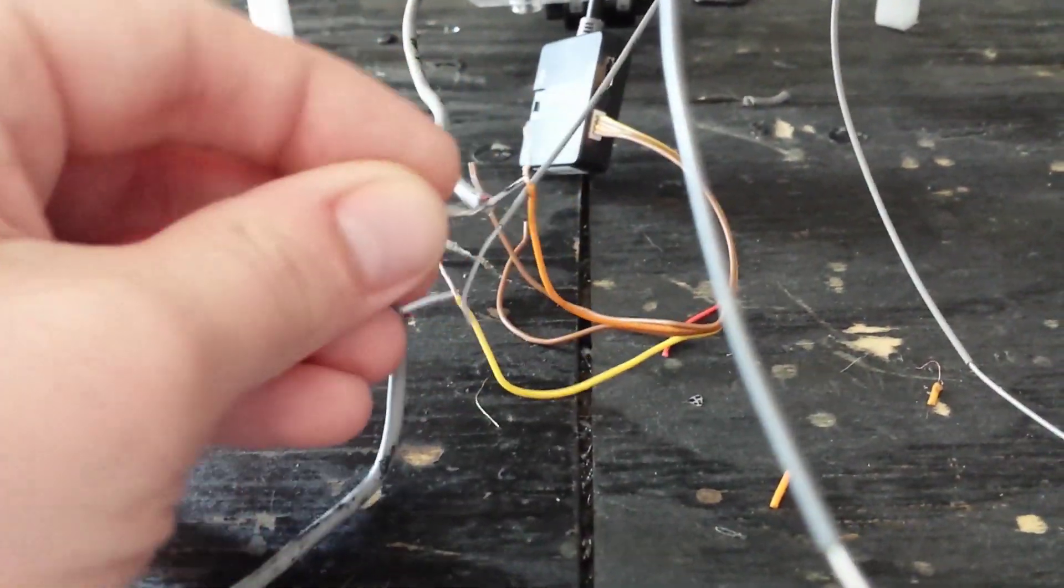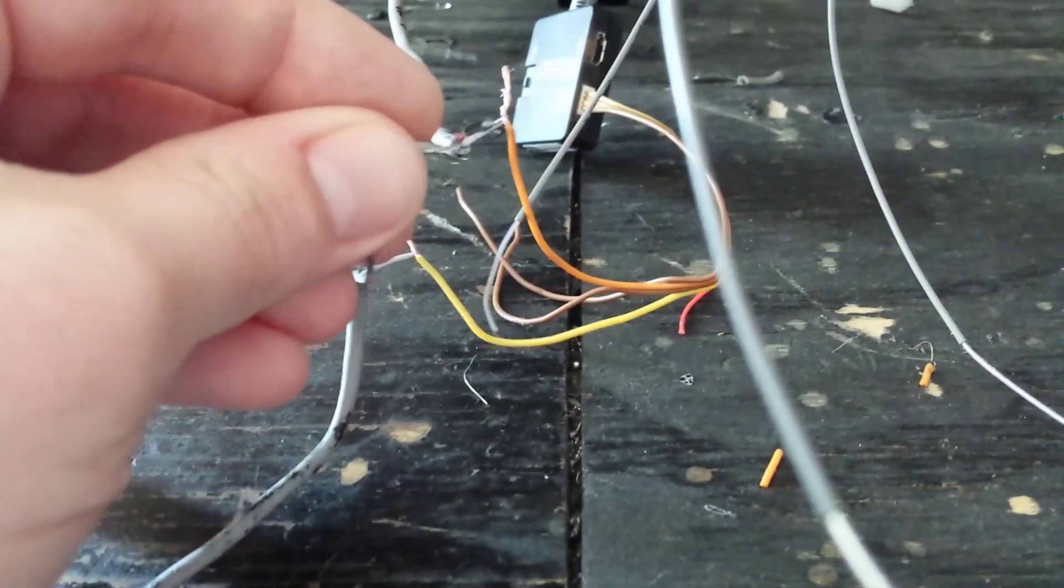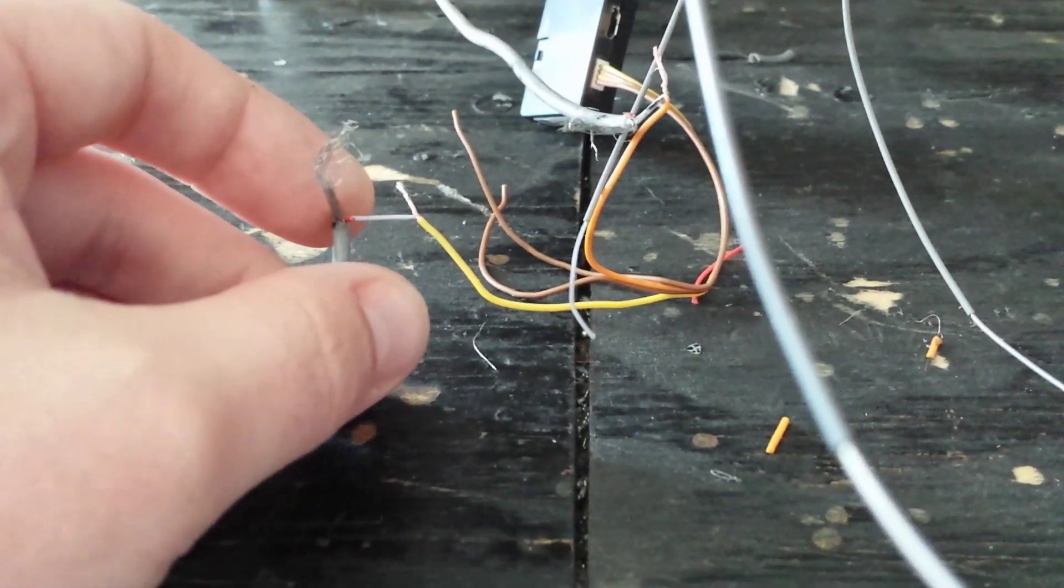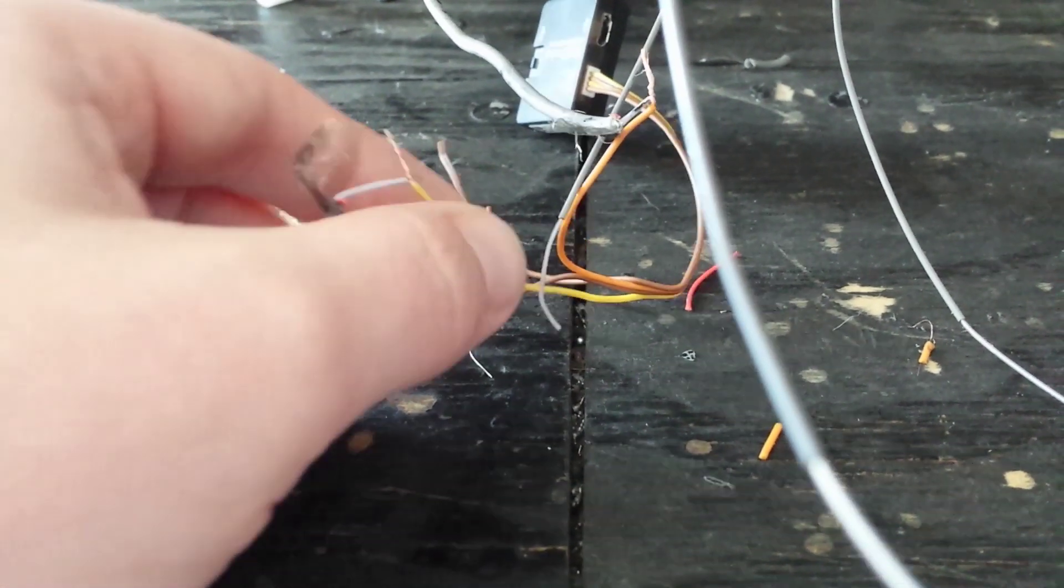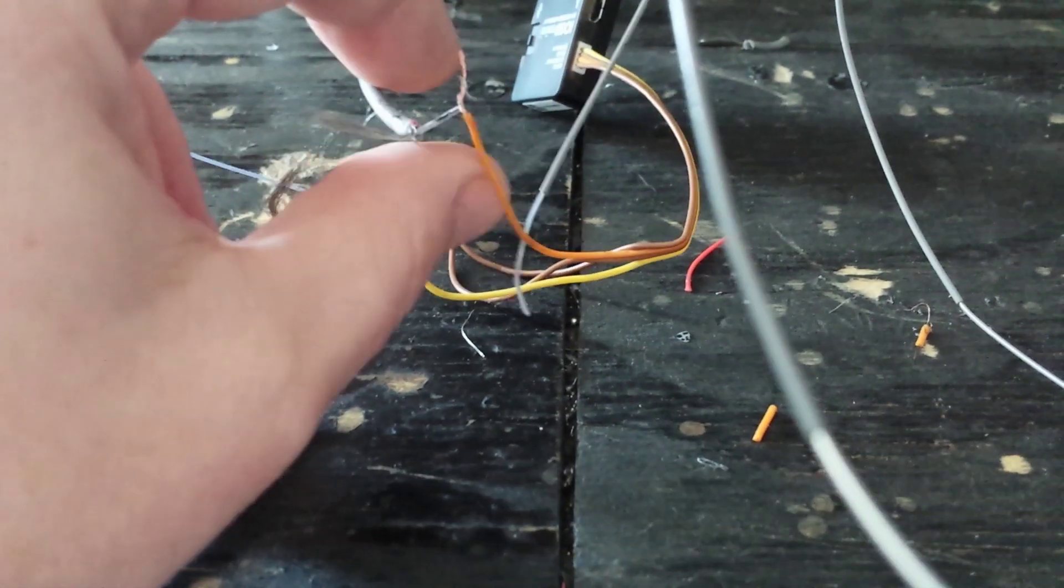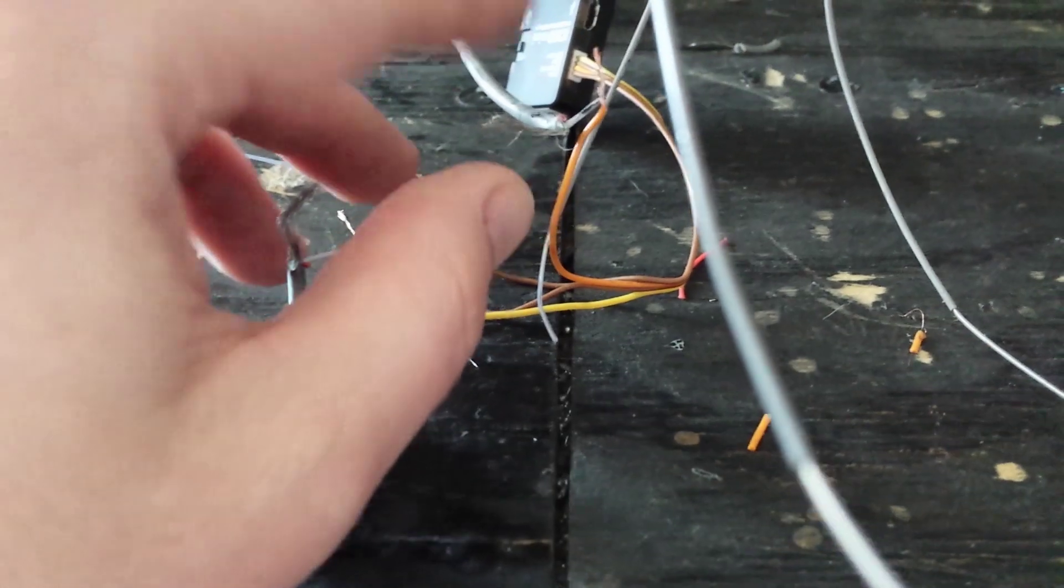So basically just ground to ground. You can go through these grounds in and out, or you can just ground straight to your transmitter. Your video feed from your GoPro or whatever camera you're using goes to the video in. And then the video out is the orange wire, and that goes straight to your video wire that goes to your video transmitter. That's really about it.